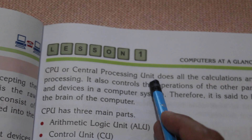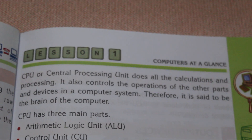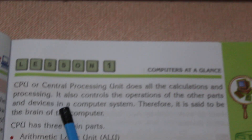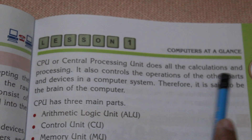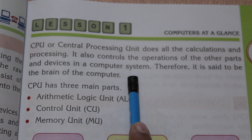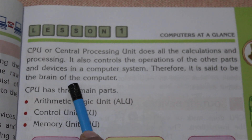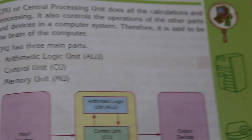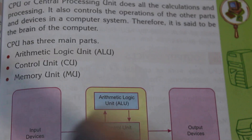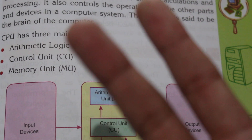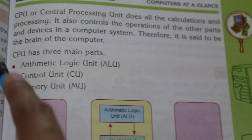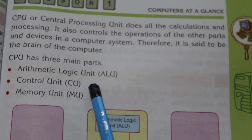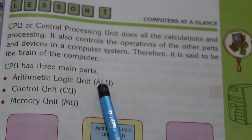The CPU, or Central Processing Unit, does all the calculations — addition, subtraction, multiplication — and also controls the operations of the other parts and devices in a computer system. Therefore, it is said to be the brain of the computer. The CPU has three main parts: the Arithmetic Logic Unit (ALU), the Control Unit, and the Memory Unit.